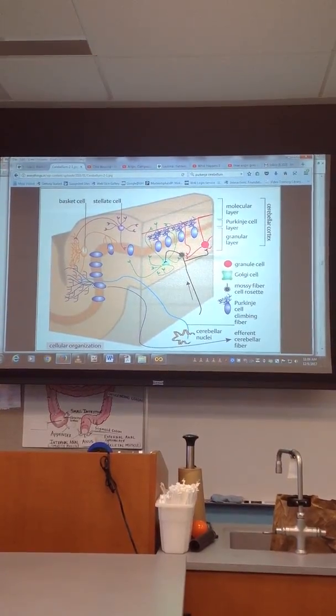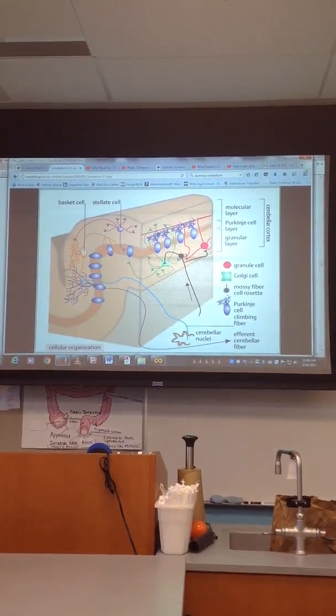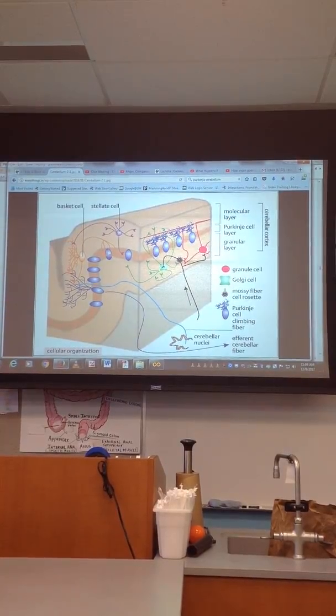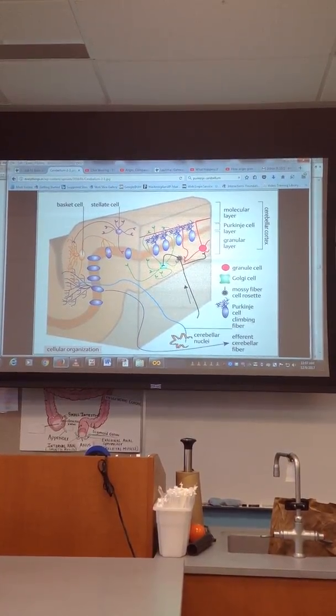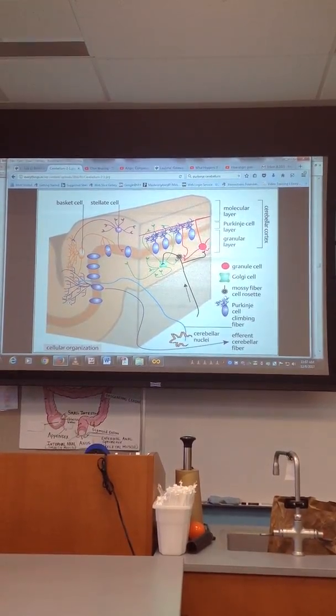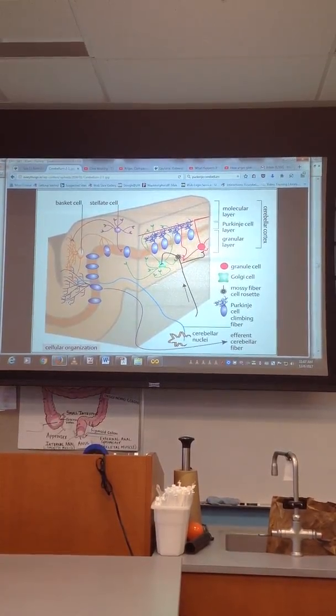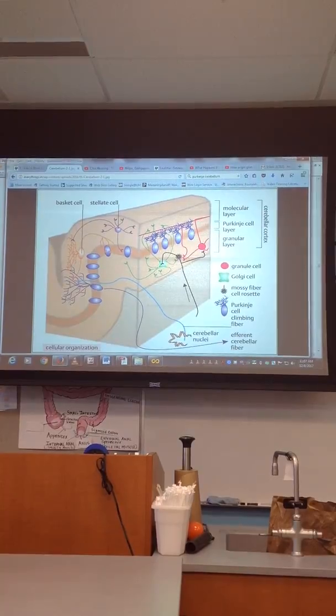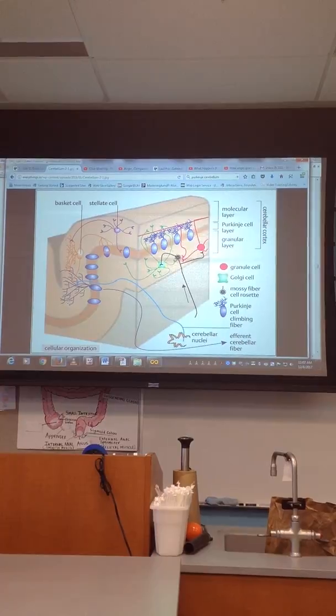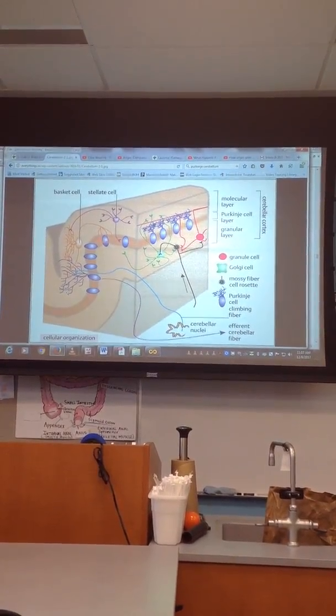And the Purkinje cells are unique in the fact that their dendritic extensions are incredibly densely packed. These guys can make upwards of 200,000 synapses with other cells. Now think about that. There are tens of millions of these Purkinje cells that each one of them make upwards of 200,000 synapses. It's just a mind-boggling number. It's just an oogledygoogledyplex number.